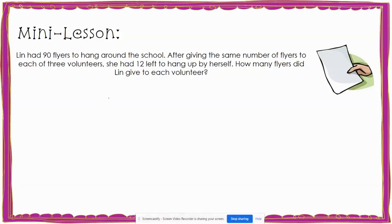Let's look at our first problem. Lynn had 90 flyers to hang around the school. After giving the same number of flyers to each of three volunteers, she had 12 left to hang up by herself. How many flyers did Lynn give to each volunteer?